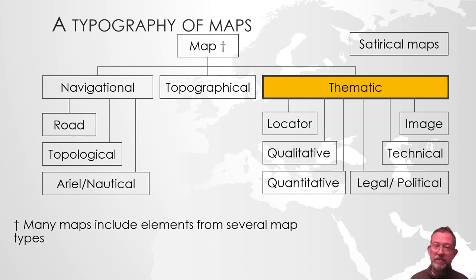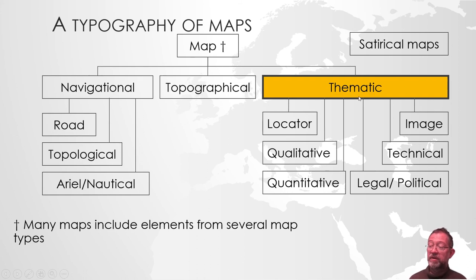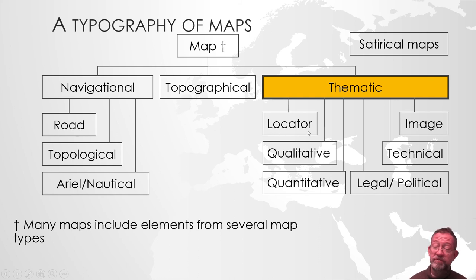Thematic maps describe the spatial distribution of some property. The main difference between the topographical map — 'topos' meaning place, a graphical description — and the thematic map is that in thematic maps the focus is on the theme, while in topographical maps the focus is on the location. Locator maps, for example, have towns as their theme, and we use them to locate where something is in relation to something else.